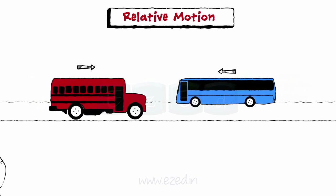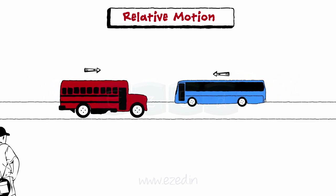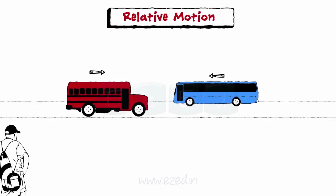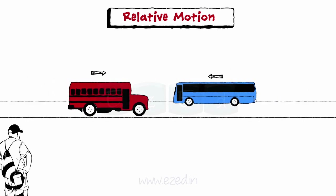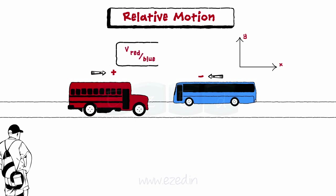An observer is watching the buses running on the highway. The velocity of the red bus is positive and the velocity of the blue bus is negative, according to the coordinate system. The general equation for relative velocity is given as: velocity of red bus with respect to blue bus equals velocity of red bus minus velocity of blue bus.